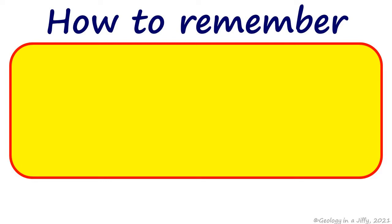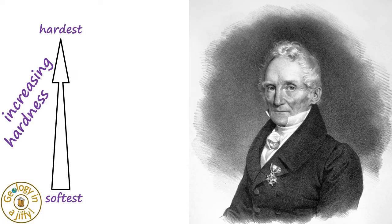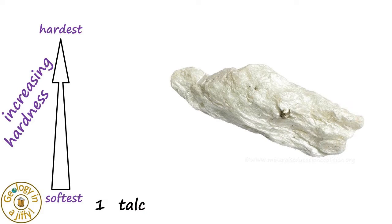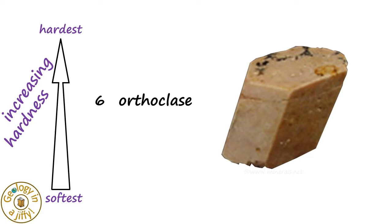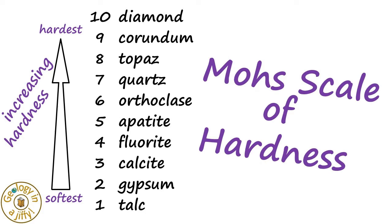Mohs devised a Scale of Increasing Hardness from the softest mineral to the hardest, using 10 minerals. Starting at the softest: talc, gypsum, calcite, fluorite, apatite, orthoclase, quartz, topaz, corundum, and diamond — giving us Mohs Scale of Hardness.